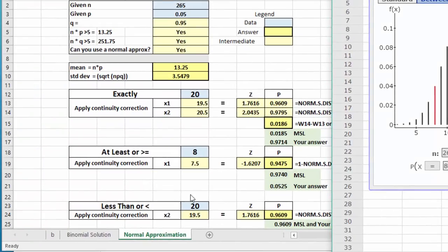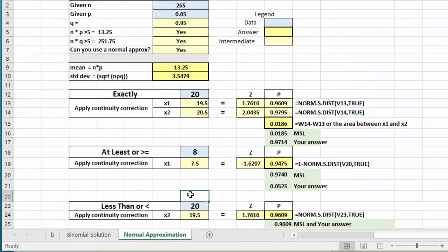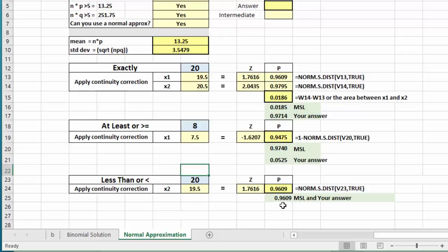The last question was Part C, what's the probability of less than 20 workers? I have a setup there, less than 20. We apply the continuity correction, gets this down to 19.5. I calculate the z for that and use the norm S function again to calculate that area to the left of the z, 0.9609. Both MyStatLab and your answer were 0.9609, so you got that one correct.